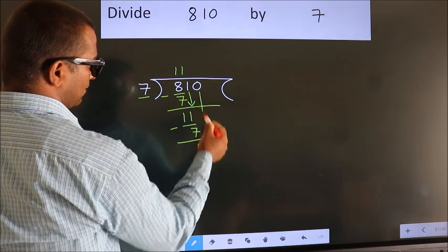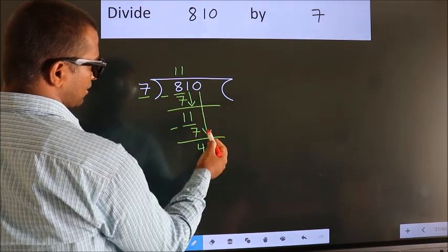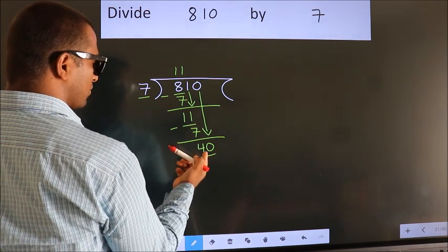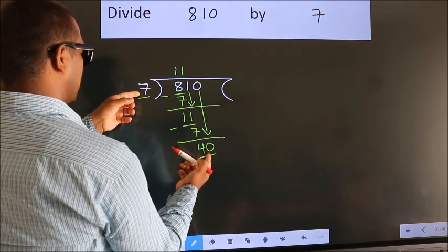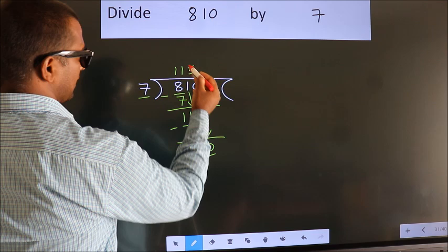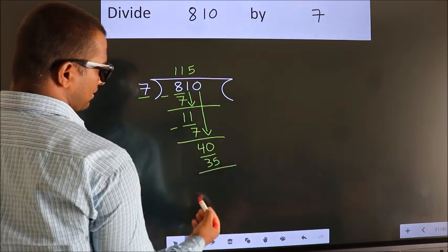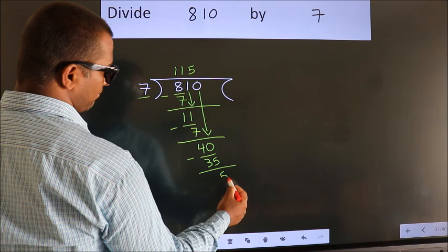After this, bring down the beside number. So 0 down. So 40. A number close to 40 in 7 table is 7 fives 35. Now we subtract. We get 5.